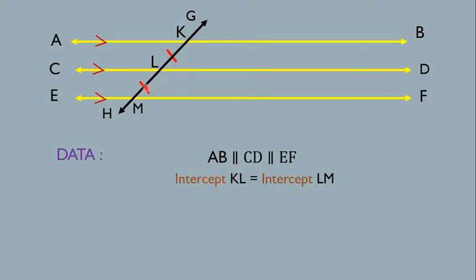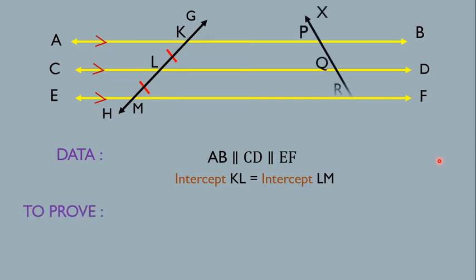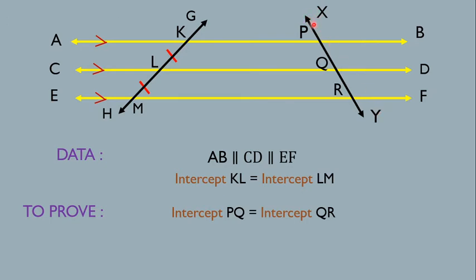The intercept KL is equal to intercept LM. With these three parallel straight lines, we have to show that the intercept PQ is equal to intercept QR. So the line segment PQ is equal to QR — this is what we want to prove. These parallel lines are such that intercept KL equals LM, and if you draw a transversal anywhere at any position, then the corresponding intercepts are also equal.